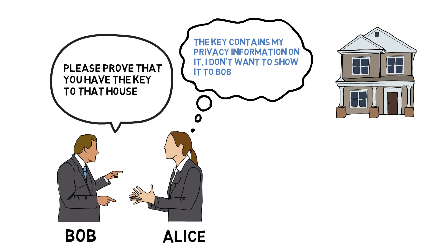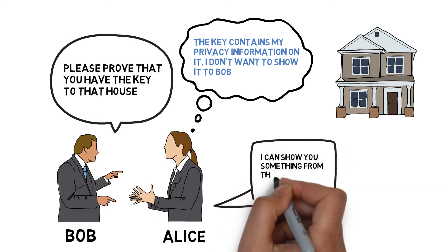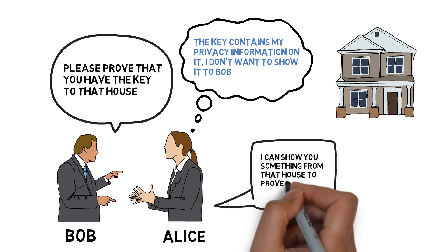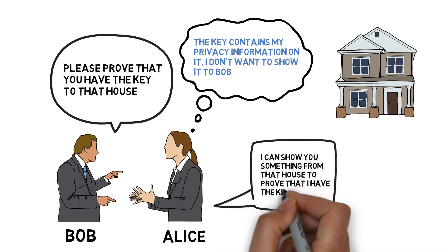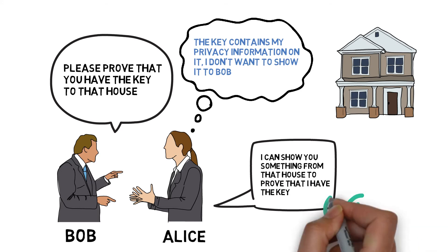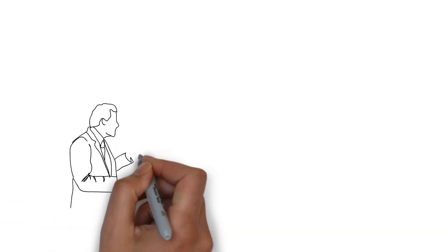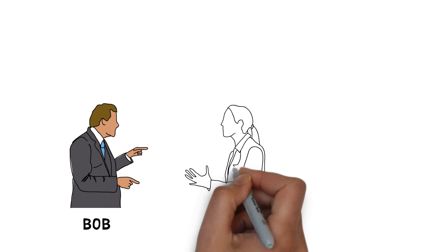What can we do to enable Alice to prove the fact without showing the key to Bob? A possible solution is Alice will tell Bob that she can grab something from the room which Bob knows and show it to Bob, thus indirectly proving that she has the key.